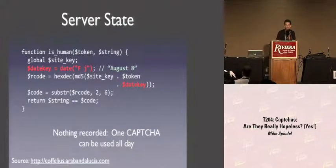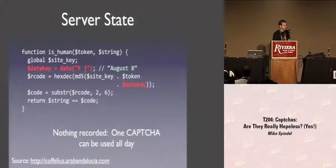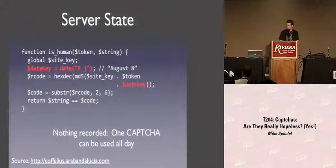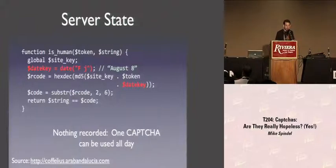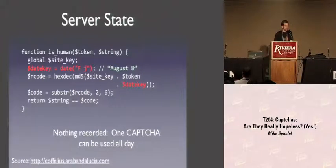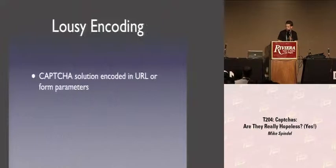Here is an example from a defunct software project whose code still lives on in various sites across the web. All this code does is compare the inputted solution to a calculated code. It calculates the code by taking the MD5 hash of a site-specific key plus the request token plus a state field — but the state field only changes once a day. So a spammer can simply solve this CAPTCHA once and reuse the same solution all day. This is not an uncommon problem.